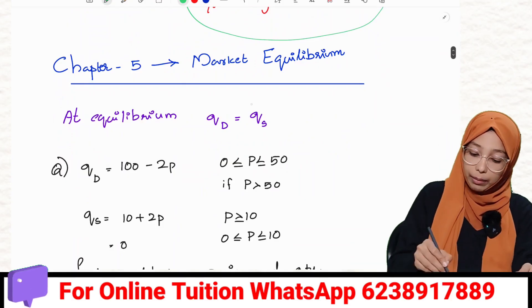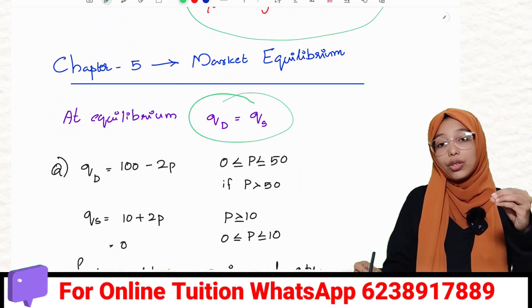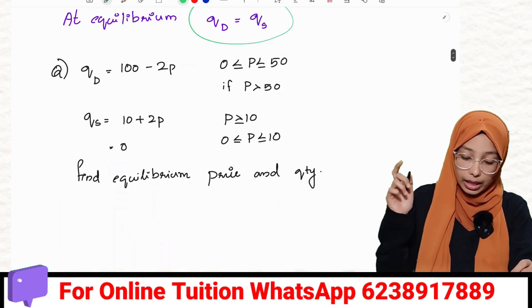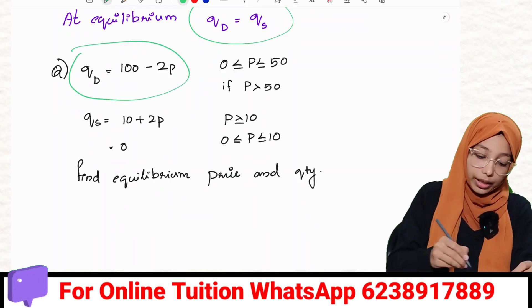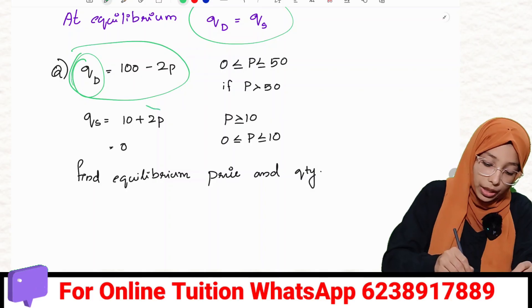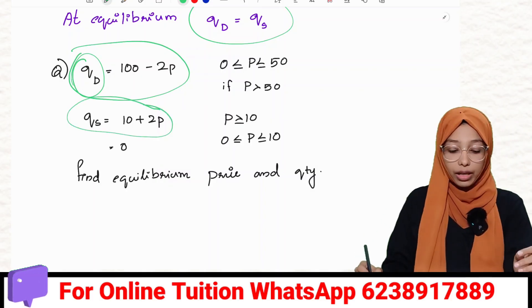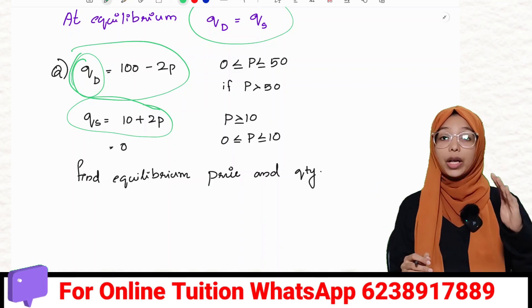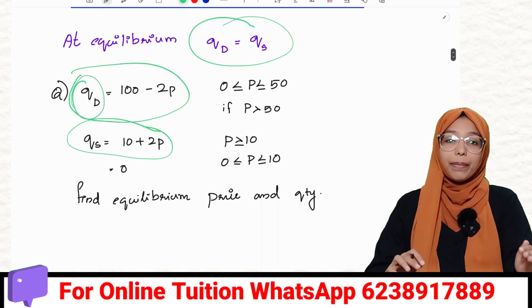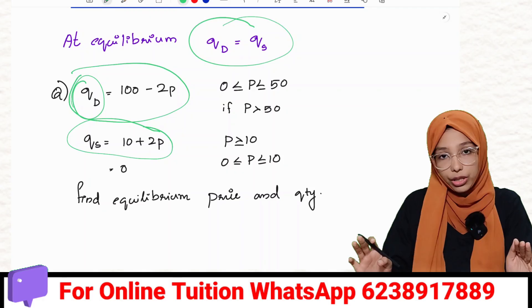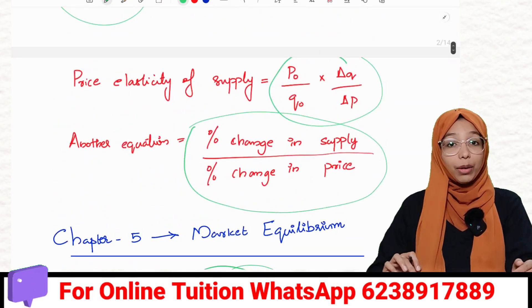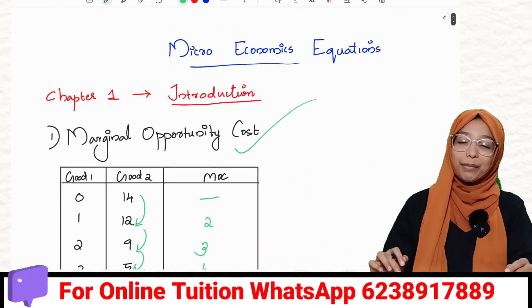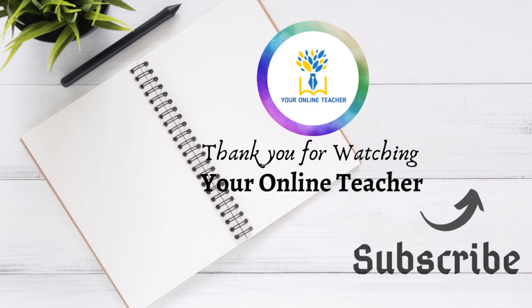In Chapter 5, Market Equilibrium, we have price and quantity. If you have a question in the exam: QD equals 100 minus 2P — that is the demand equation; QS equals 10 plus 2P — that is the supply equation.